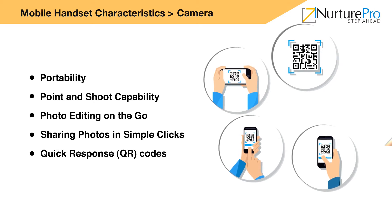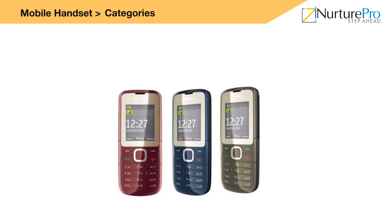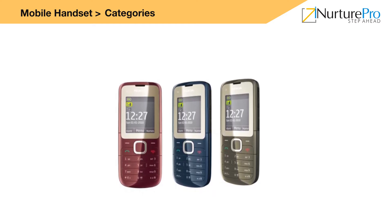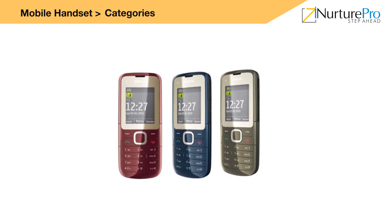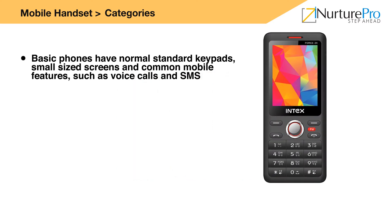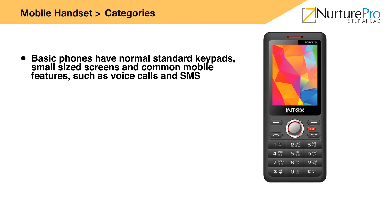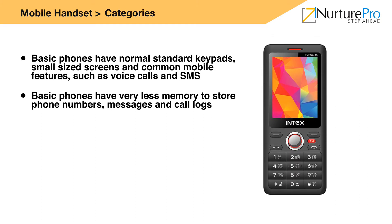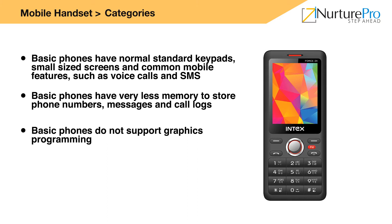Mobile handsets play an important role in enabling subscribers to use mobile value-added services. Therefore, in spite of the network capabilities, the type of service delivered depends on the handset being used. Now let's look at the categories of mobile handsets. Basic phones: Basic phones have a normal standard keypad, small-sized screens, and common mobile features such as voice calls and SMS. However, basic phones have very limited memory to store phone numbers, messages, and call logs. Basic phones do not support graphics programming as they do not have graphics hardware.